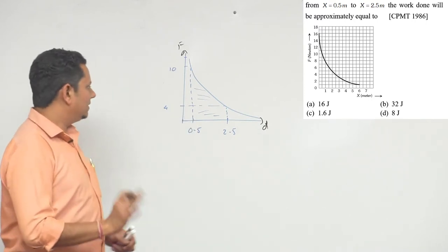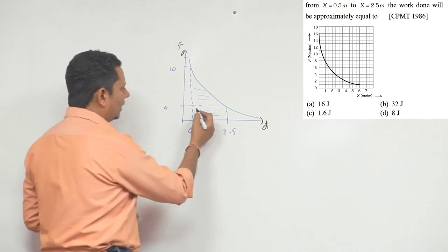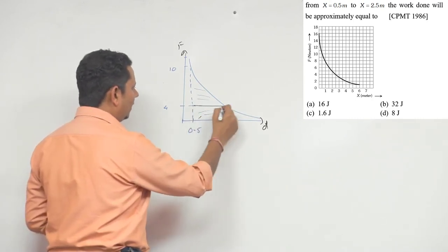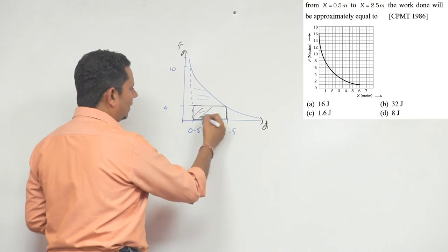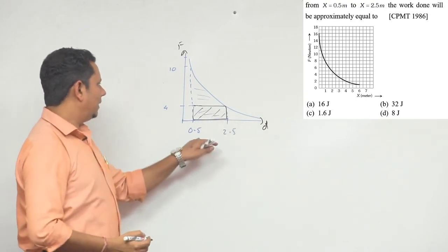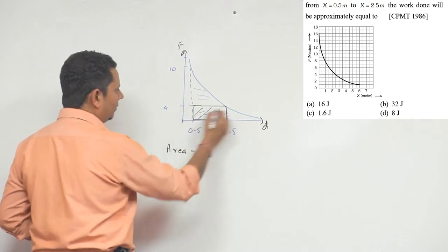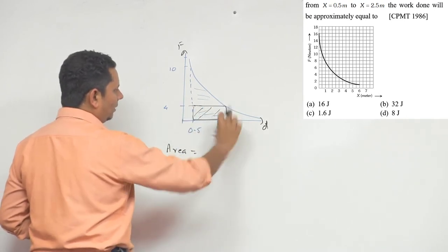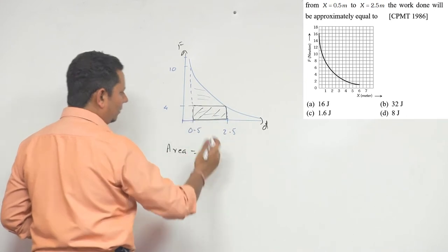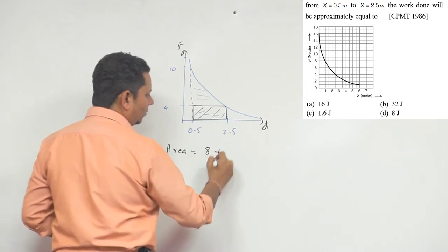Then we divide it into this part, which we will call the rectangular part. So that total area will be equal to 4 multiplied by 2, which equals 8. Plus...